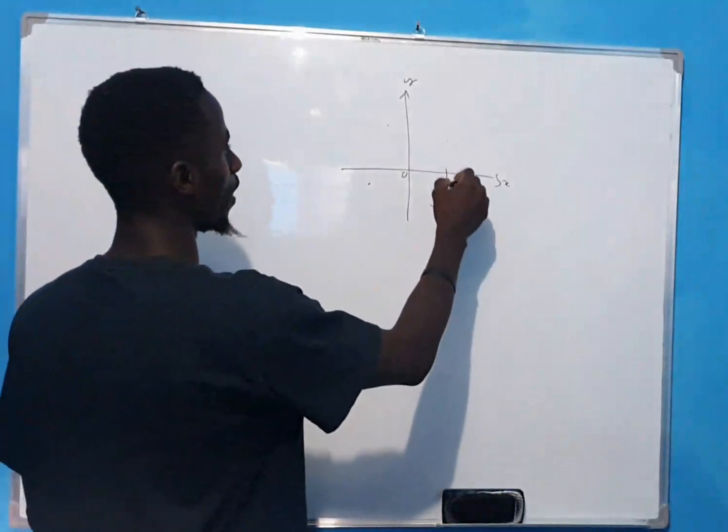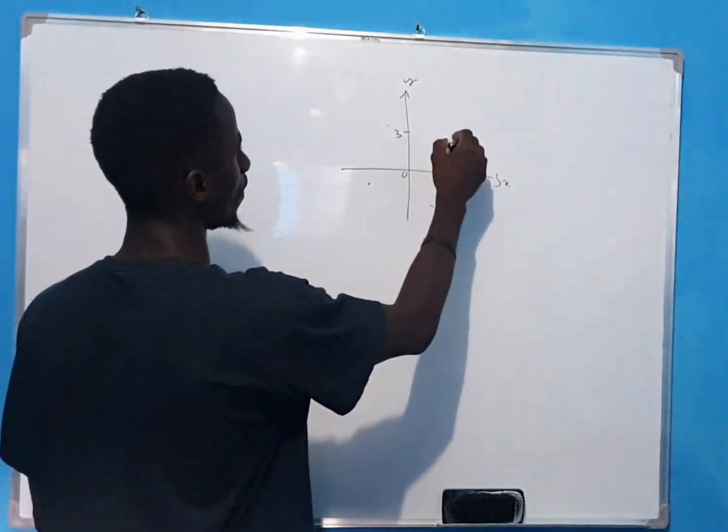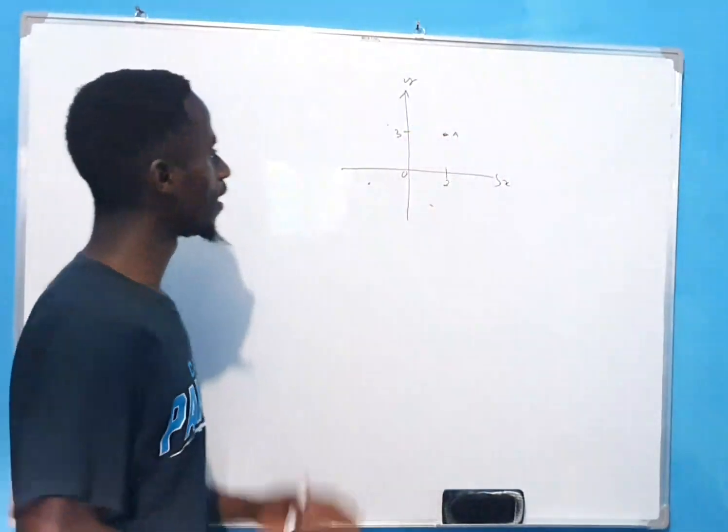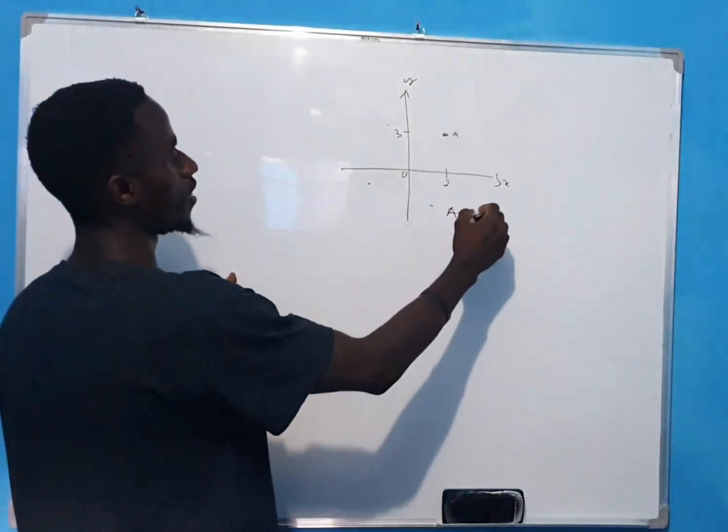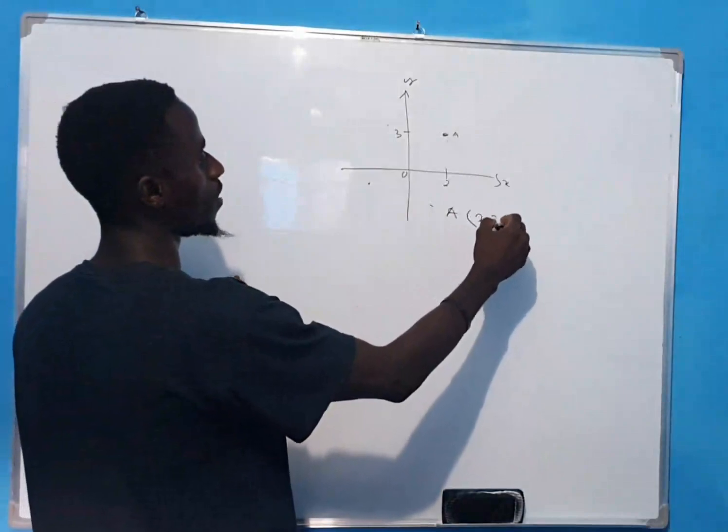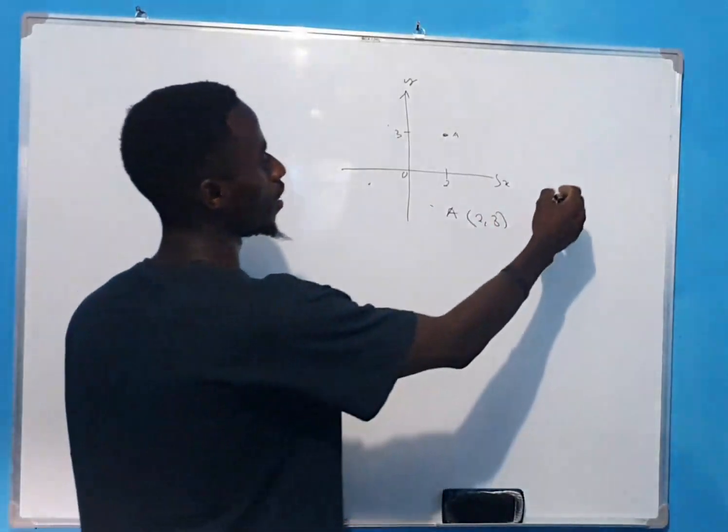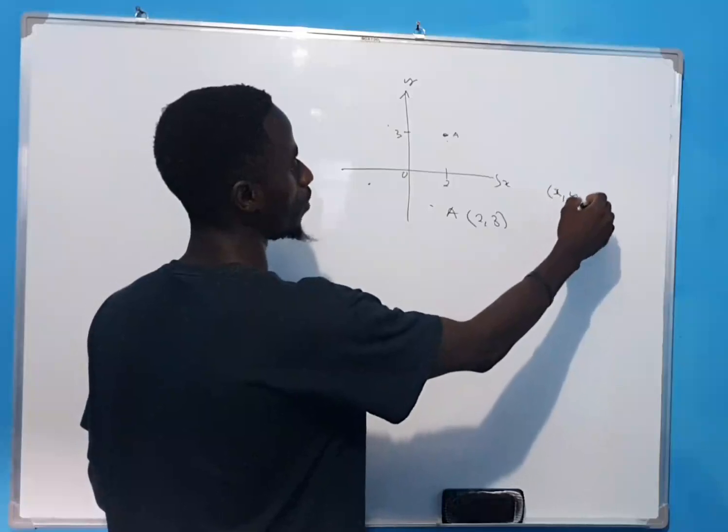I can have 2 here, I can have 3 there. And I say, what are the coordinates of point A? Point A, it will be 2, 3, but why 2, 3, not 3, 2? You always start with x, you end with y.